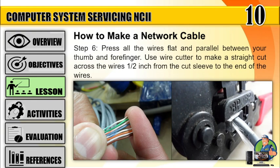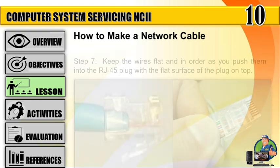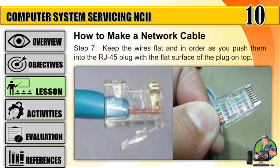Step 6: Press all the wires flat and parallel between your thumb and forefinger. Use a wire cutter to make a straight cut across the wires half an inch from the cut sleeve to the end of the wires. Step 7: Keep the wires flat and in order as you push them into the RJ-45 plug with the flat surface of the plug on top.